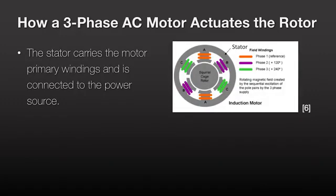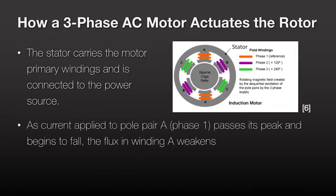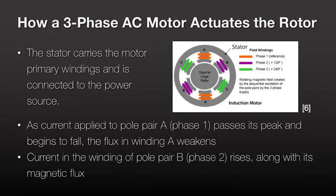The three field windings are out of phase by 120 degrees with each other. As current applied to pole pair A, in other words phase 1, passes its peak and begins to fall, the magnetic flux induced in winding A weakens. Current in the winding of pole pair B, in other words phase 2, rises along with its induced magnetic flux.